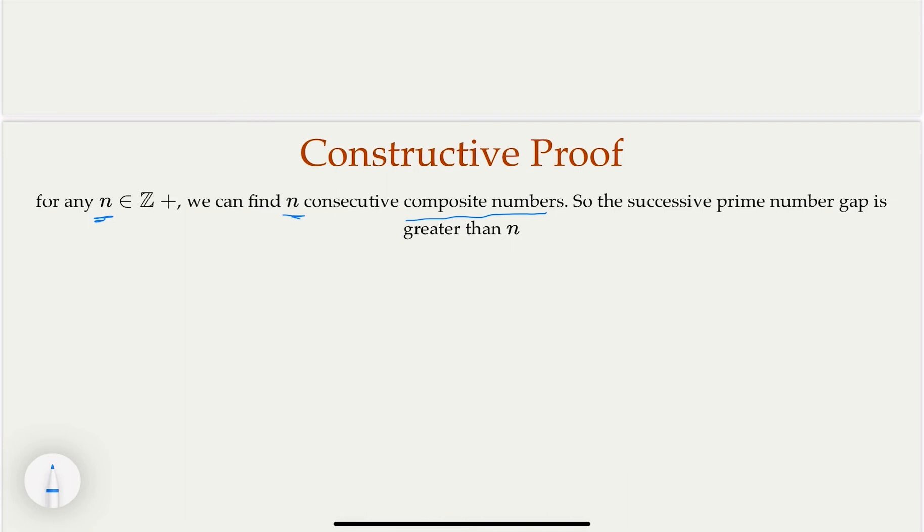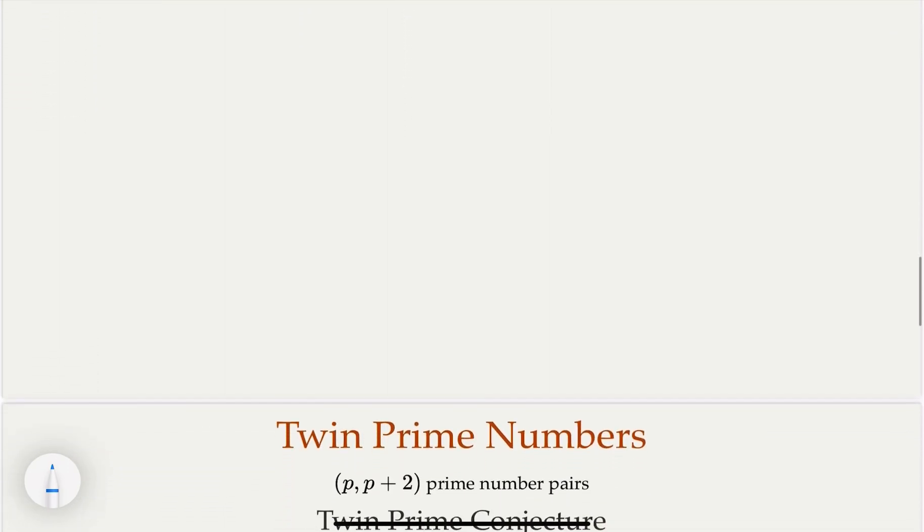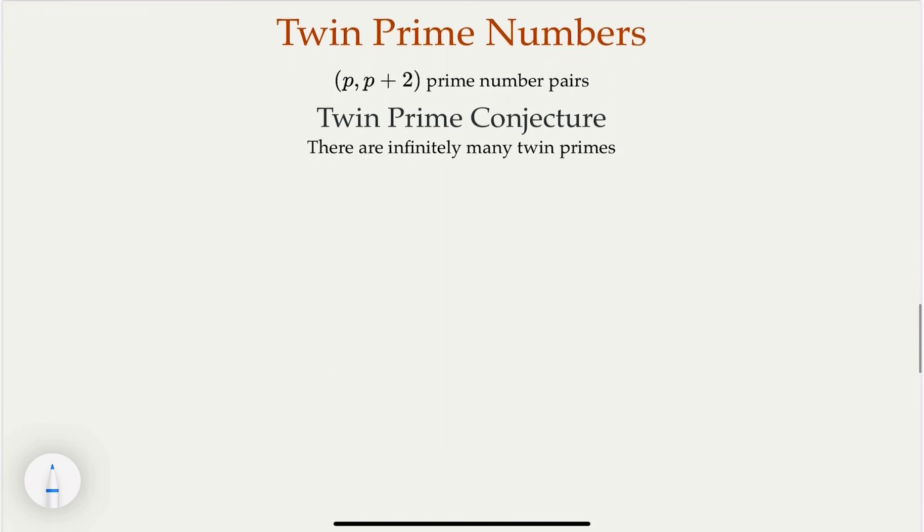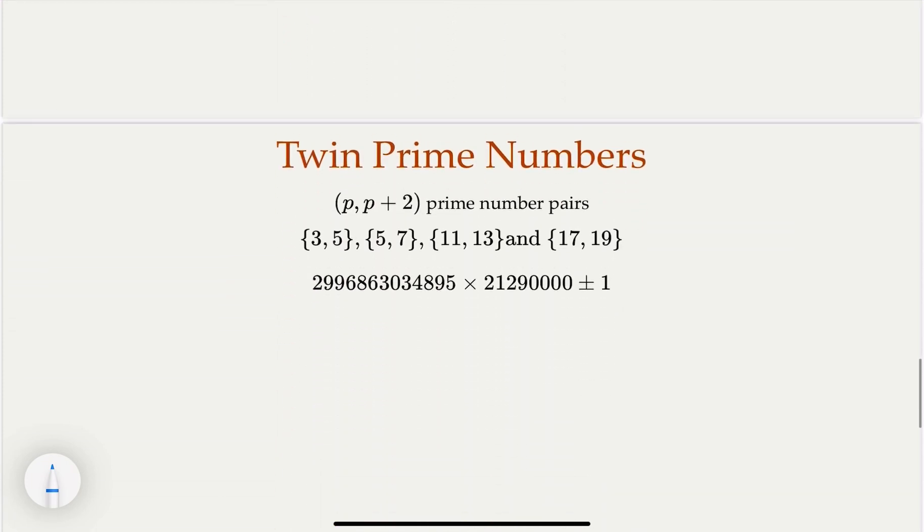Of course, the gap is not guaranteed to always be big. There are what are called twin primes—two prime numbers with a difference of two. There's the twin prime conjecture saying there are infinitely many twin prime numbers, which is not proven but remains a conjecture. Here are some smaller examples, and here is one of the largest known twin prime pairs.